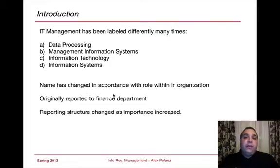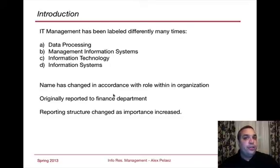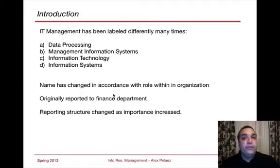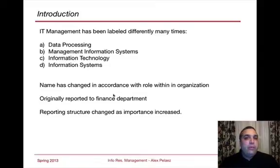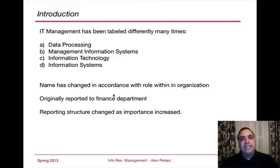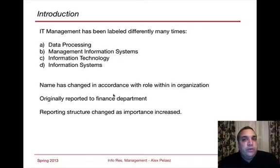What happens is that the importance of the organization dictates what name or brand it should have. In some organizations, you may have had application development and infrastructure. In other times, it was just data processing or business computer information systems. Right now, most of the time, there's going to be the word 'information' in a lot of organizations because that's the critical driver for what IT is really doing. The name has changed with regards to its role and importance in the organization.